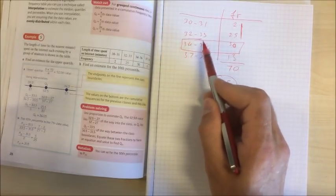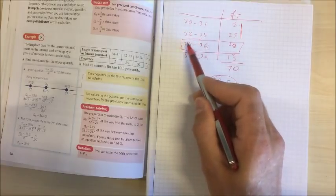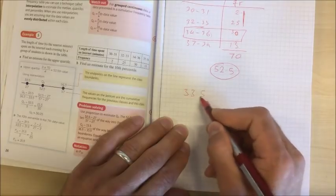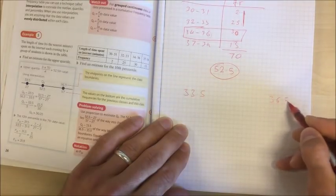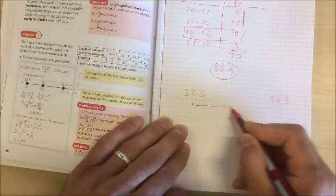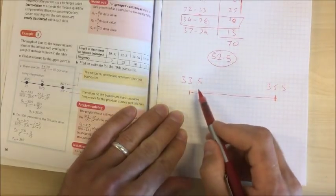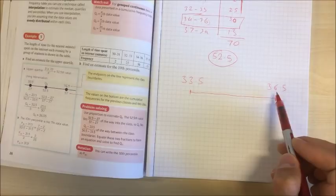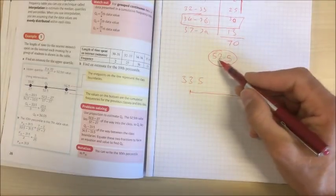Remember 34 to 36, this class ends at 33 this class starts at 34 so this class actually goes from 33.5 up to 36.5. So all we know is that our upper quartile is somewhere in this group here.